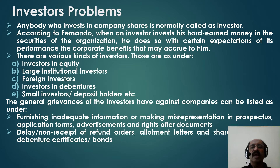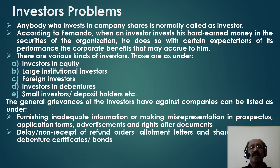The general grievances of investors against companies include: providing inadequate information or making misrepresentation in prospectus, application forms, advertisements, and rights offer documents — wrong information that may pertain to wrong people in the board, wrong names in the board, or giving wrong information about the balance sheet of a company. Other grievances include delay or non-receipt of refund orders, allotment letters, share certificates, debenture certificates, and bonds.